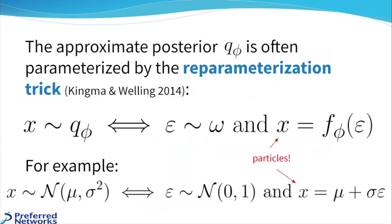For example, say we want to sample from this normal distribution parameterized by mu and sigma. Well, what we can do is first sample from this fixed unit Gaussian, and then run that sample through the function mu plus sigma times epsilon. And the result of that is the sample from the normal distribution.